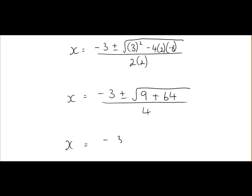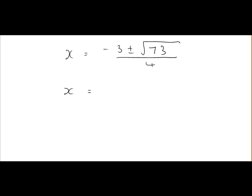So that's equal to minus 3 plus or minus the square root of 73 all over 4. So x is equal to minus 3 plus or minus the square root of 73, you can figure that out in your calculator, is 8.544. That's all divided by 4.